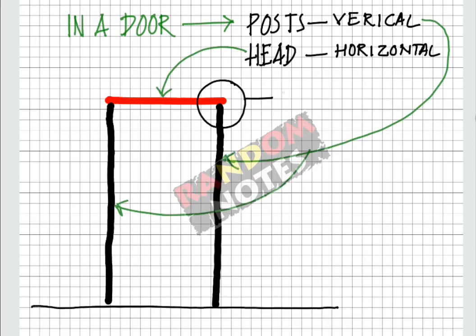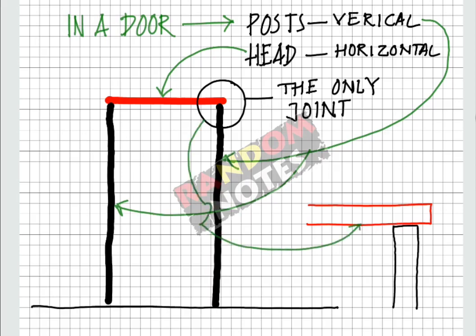There is only one joint, the one between the head and the post. This is required to assemble the frame. The first important thing to be kept in mind is that the head comes above the post. This head will come above this post, which means that the head rests above the post.